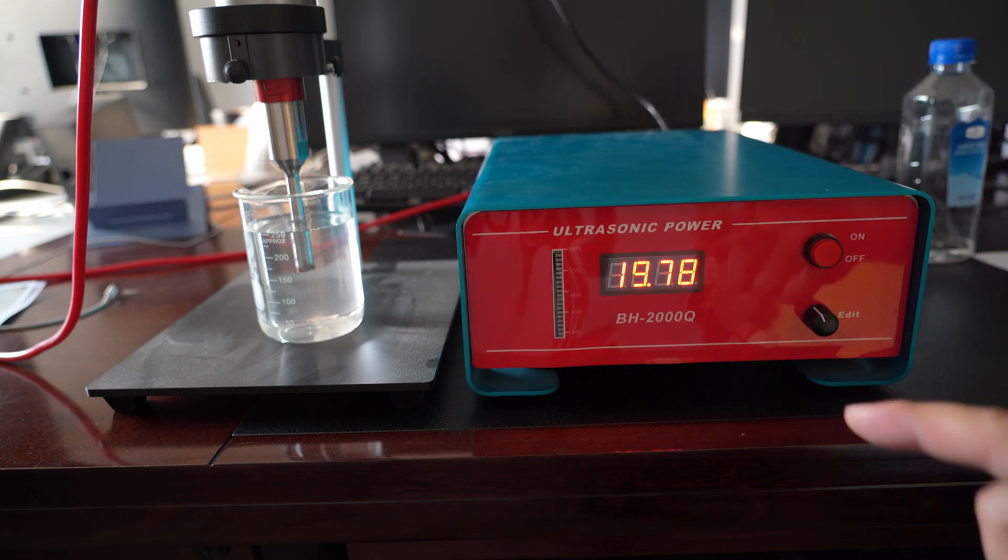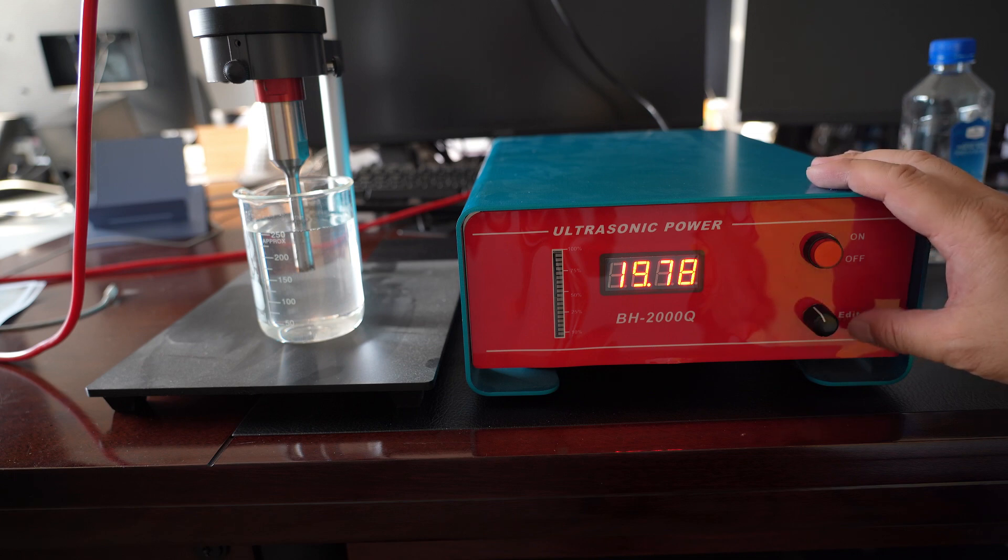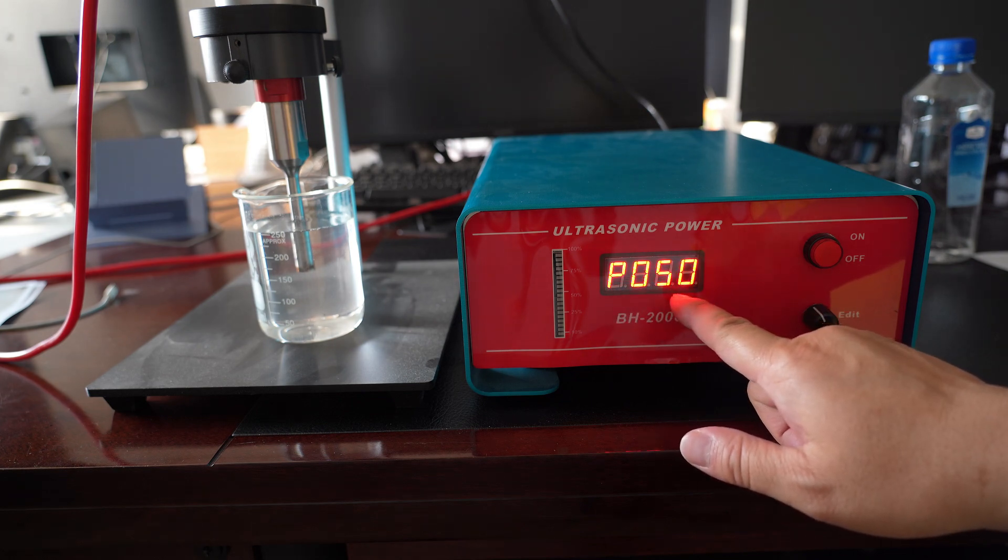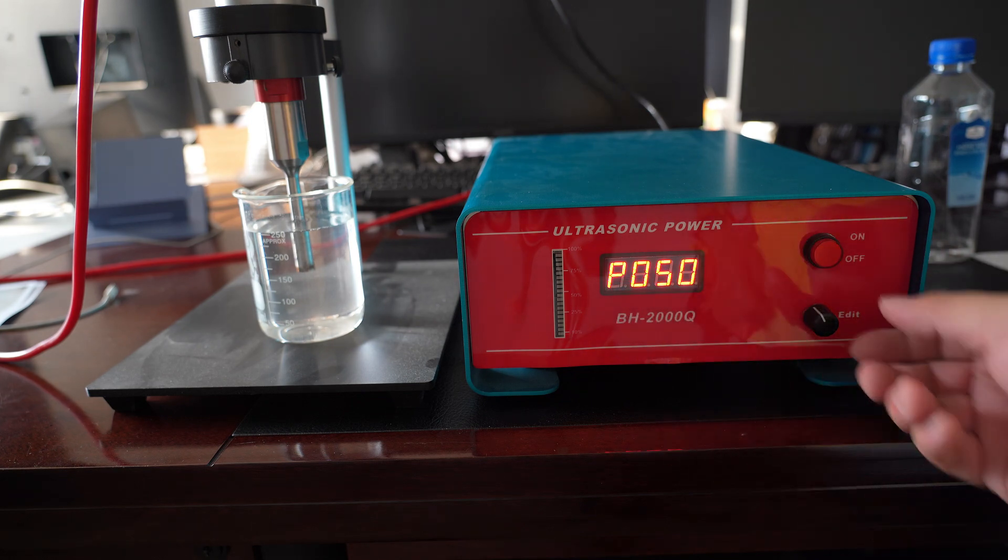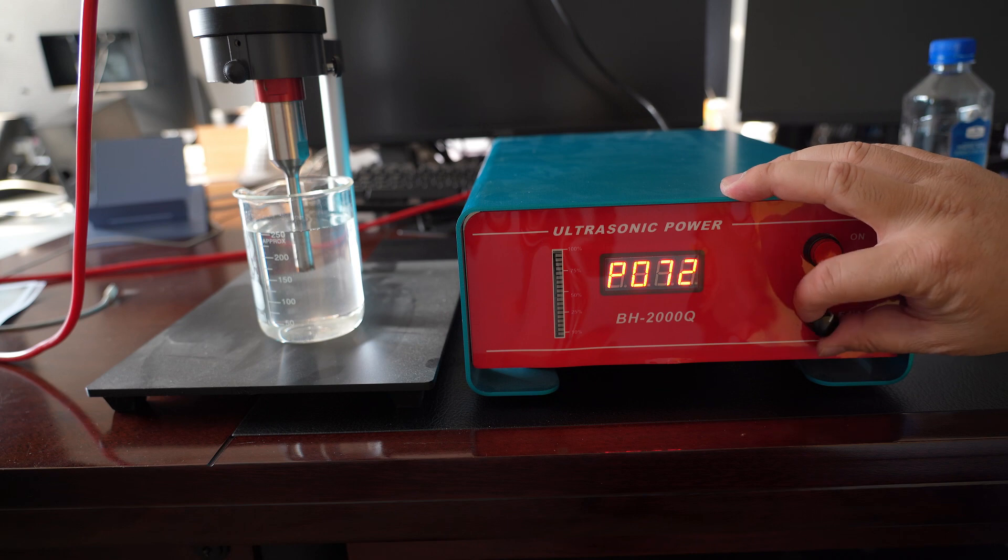When you want to change the power percentage, short press the edit button. See? P050. That means 50 percentage. You can turn it to increase the power or decrease the power.